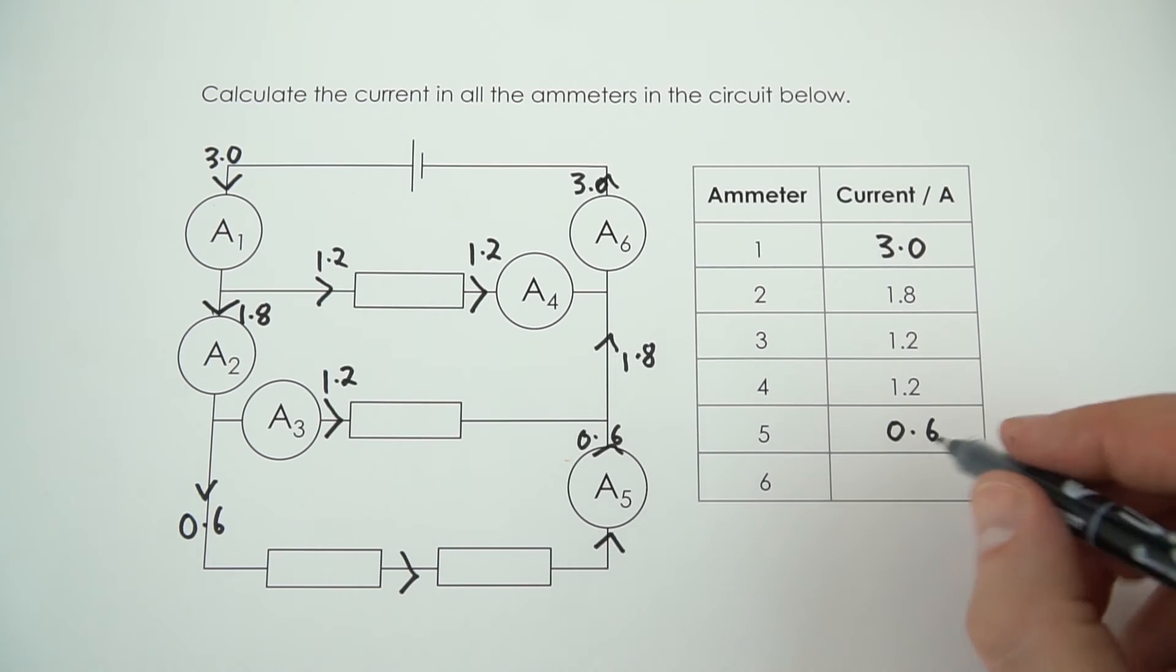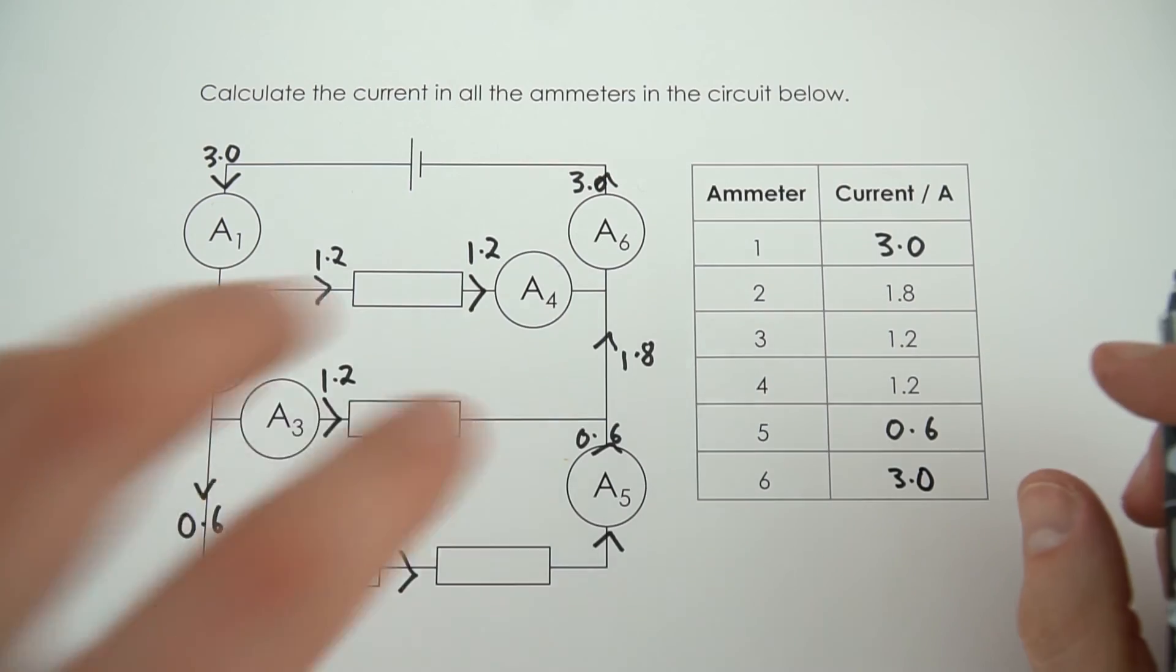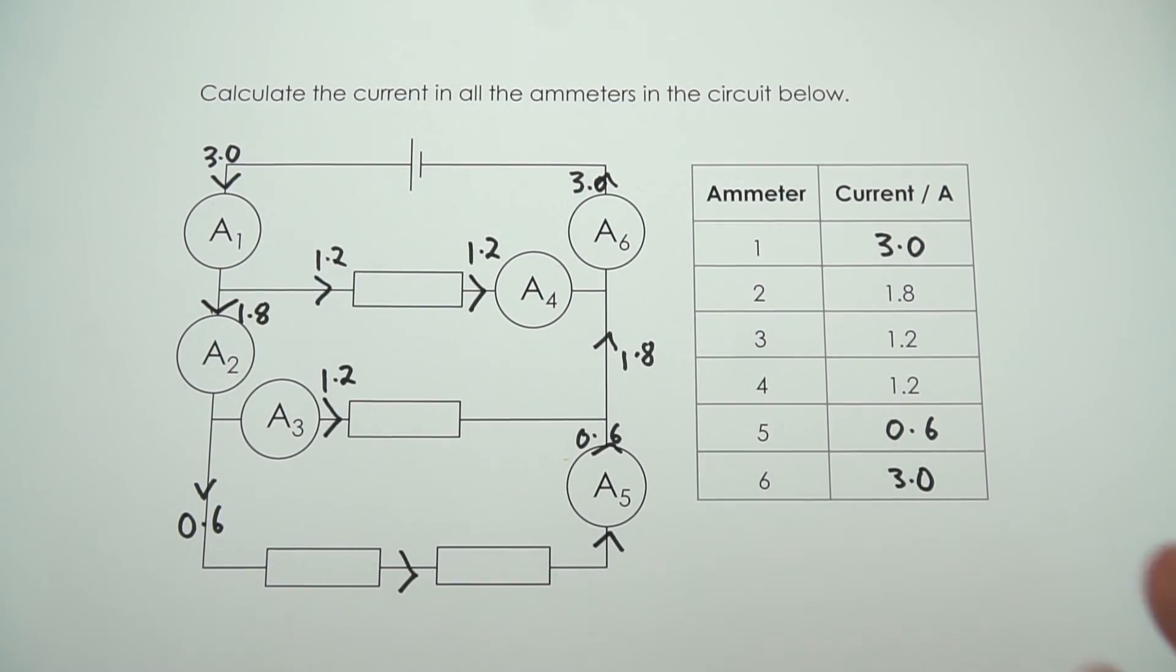The value for reading ammeter 6 is equal to 3.0. All I'm doing is labeling stuff on my diagram and working around it in this logical format in order to finish answering this question.